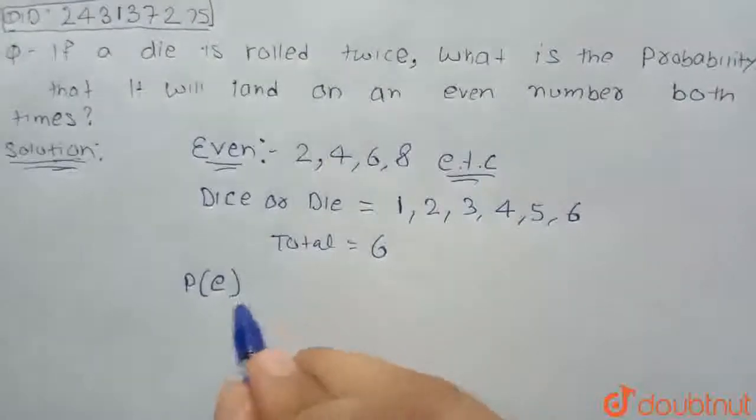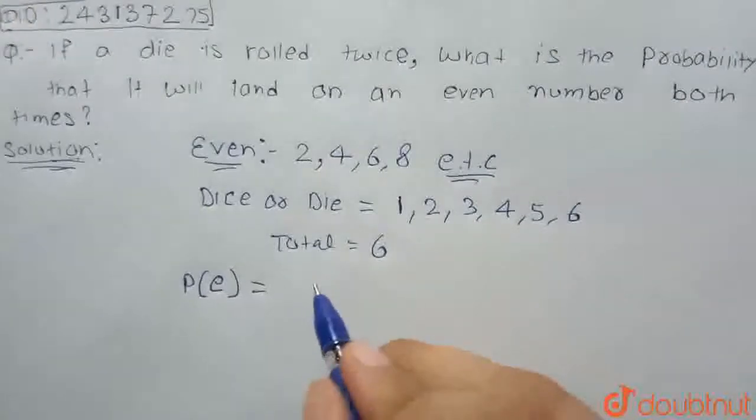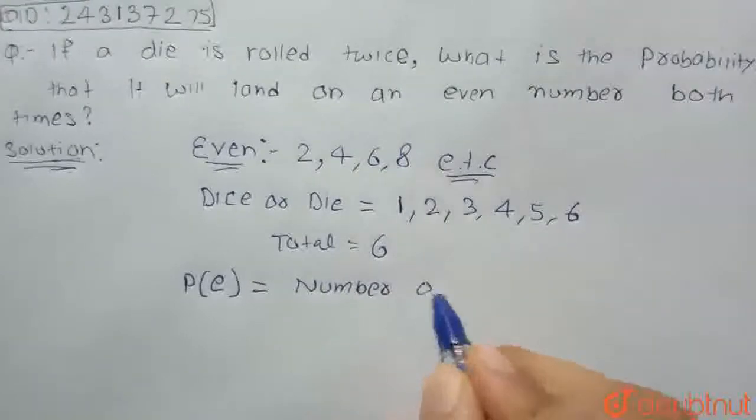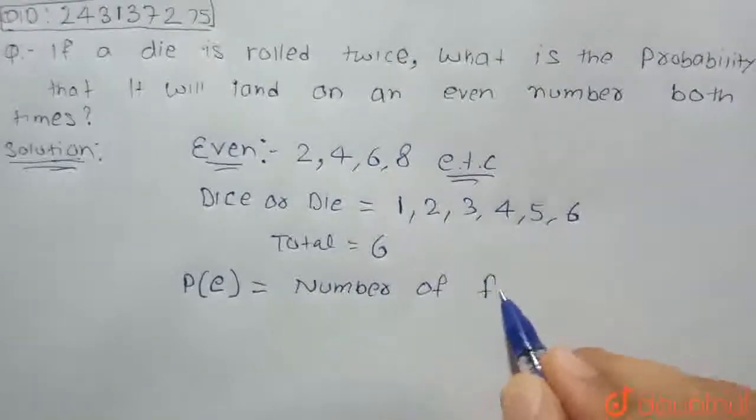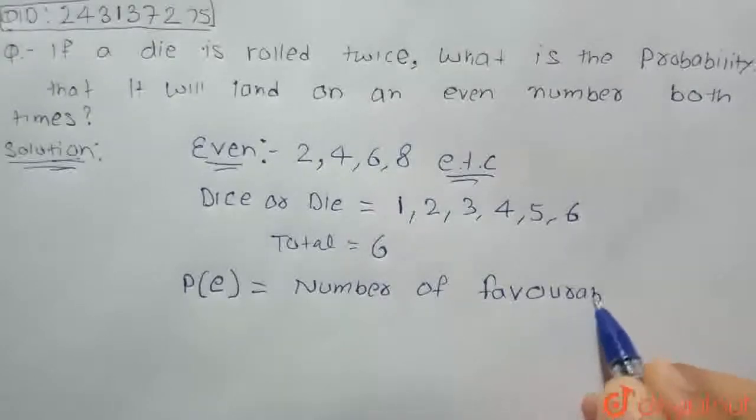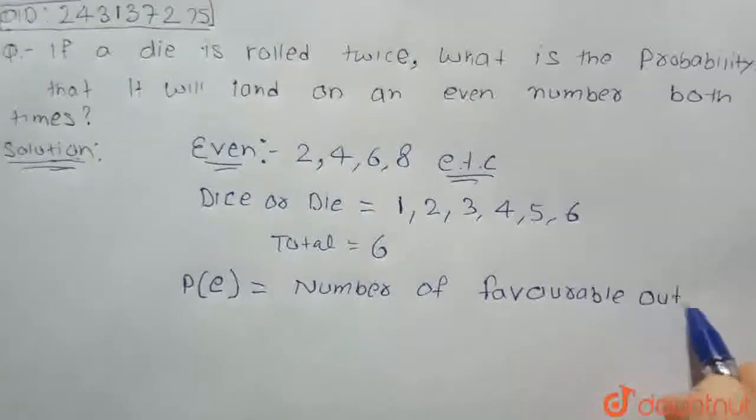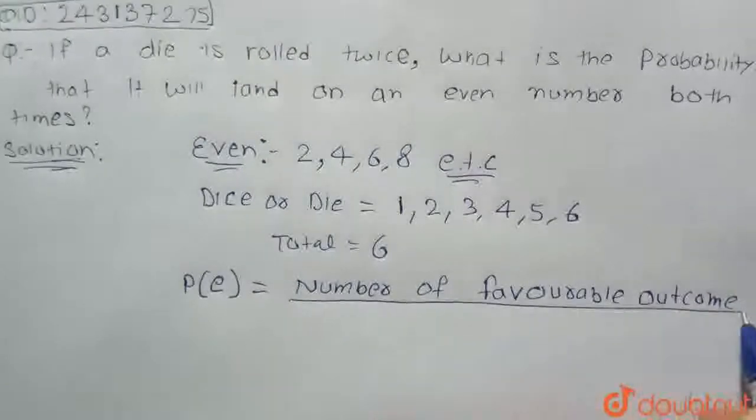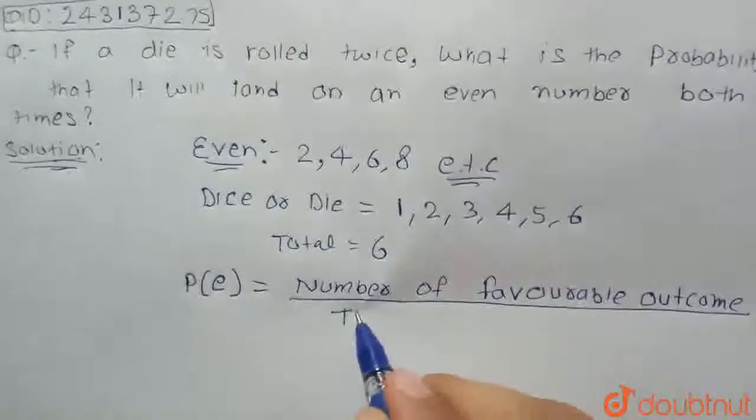is equal to number of favorable outcomes divided by total number of outcomes.